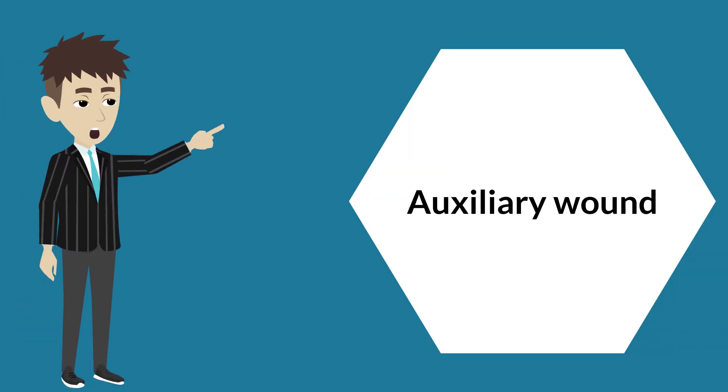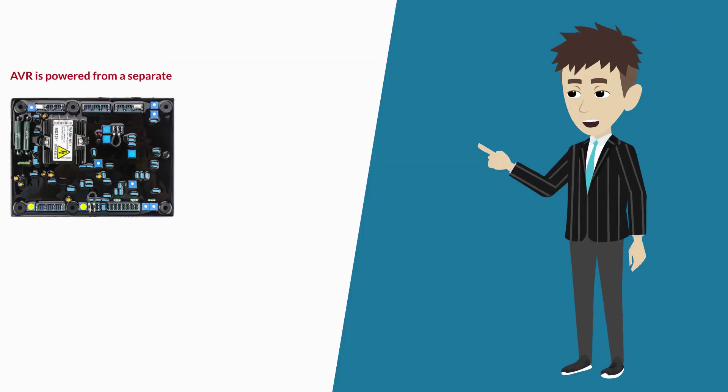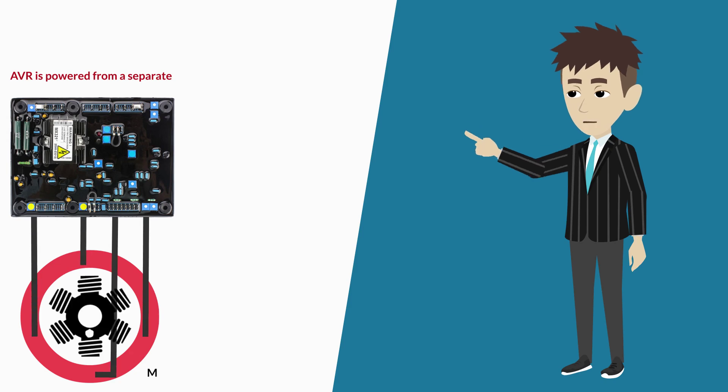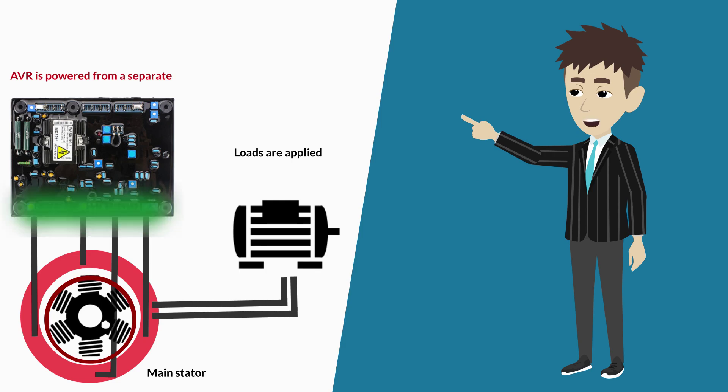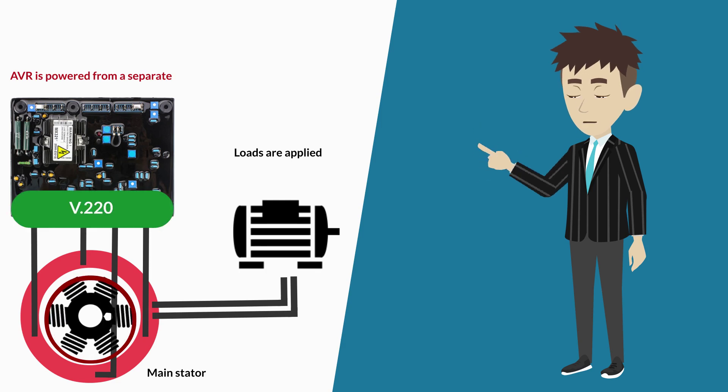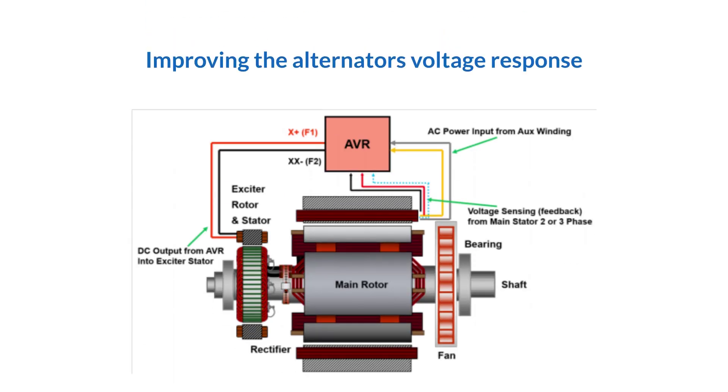With auxiliary wound alternators, the AVR is powered from a separate winding embedded in the main stator. When loads are applied to the main stator, the effect on this separate winding is minimal, improving the alternator's voltage response.